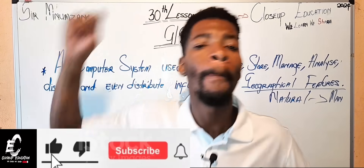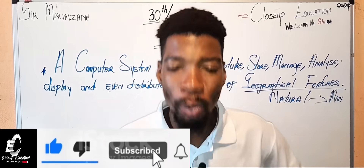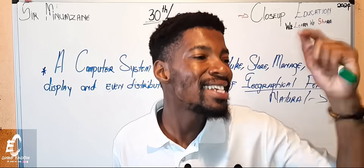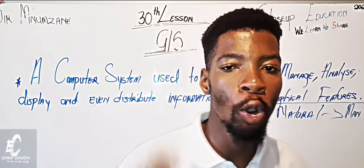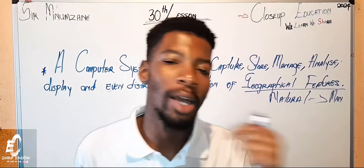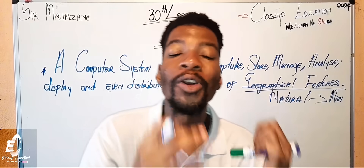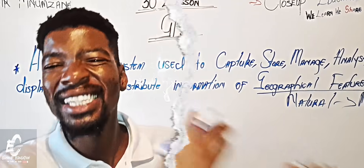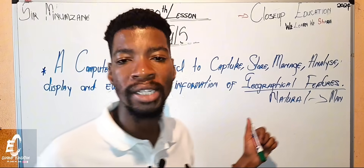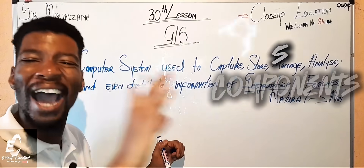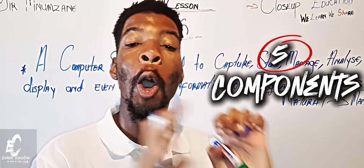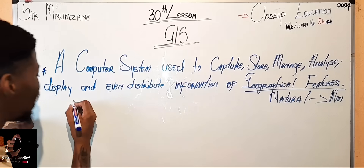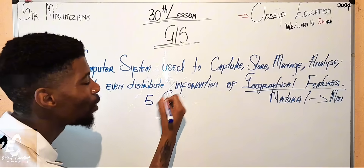Please like this video and subscribe to my channel, because I'm going to be spending two hours in this class. Now, in order for GIS to be possible, what actually creates this computer system? There has to be something — it is called the five components. There are five core components that contribute to the creation of GIS.